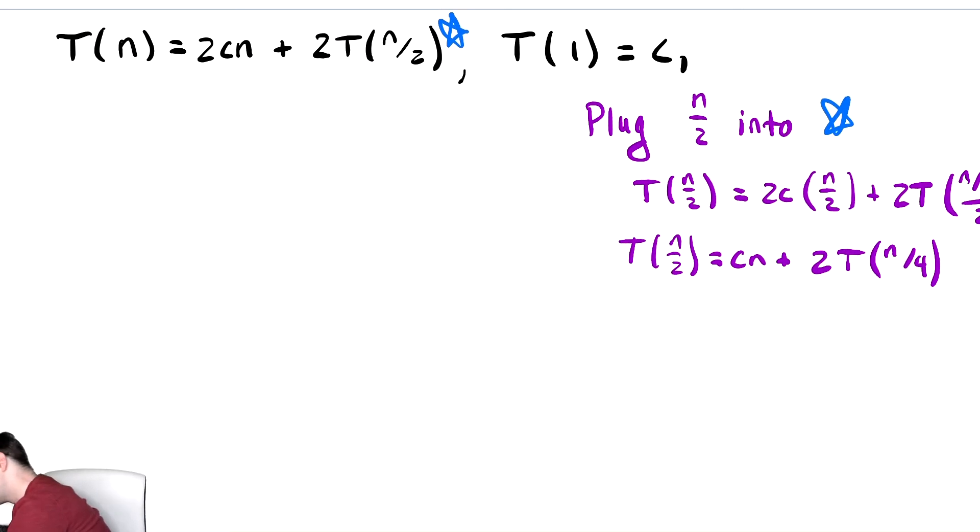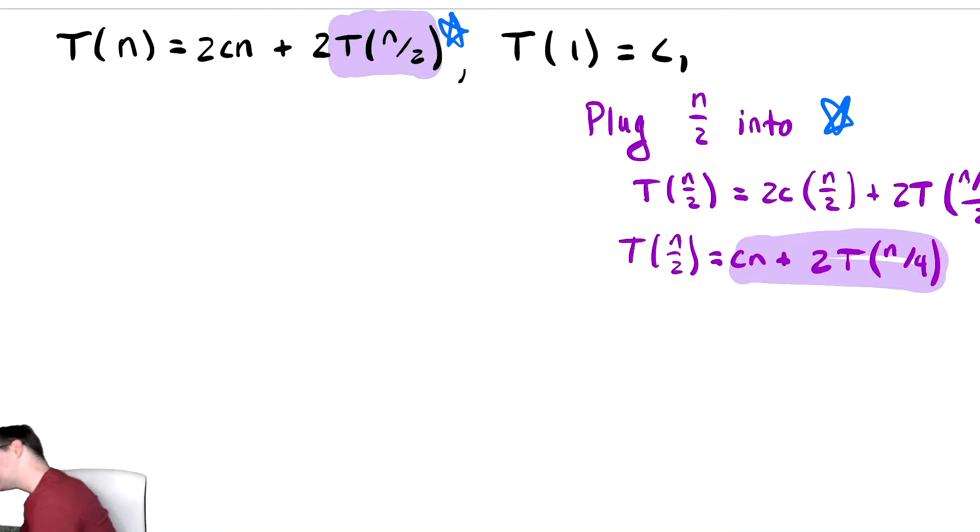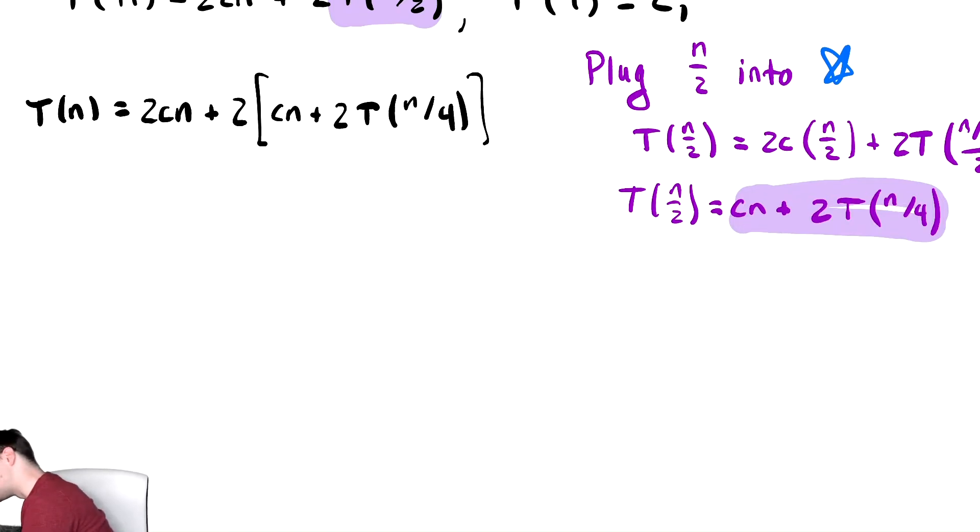We then replace T of n over 2 with the expression there. Let's highlight it to signify exactly what we're doing. This purple expression is going to replace the T of n over 2 in that equation. So T of n equals 2cn plus 2 times the stuff highlighted in purple, which is cn plus 2T of n over 4. Distributing the 2, we get T of n equals 2cn plus 2cn plus 4T of n over 4.